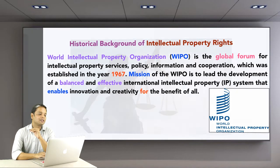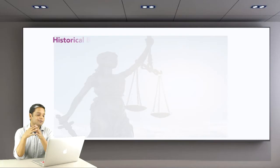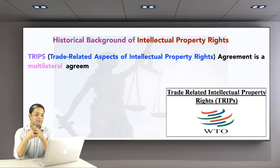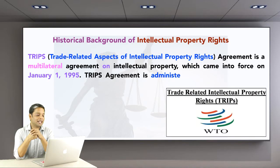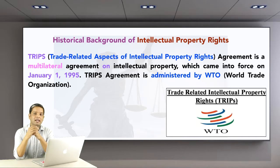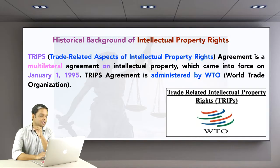The next important instrument is the TRIPS Agreement — Trade Related Aspects of Intellectual Property Rights. The TRIPS Agreement is a multilateral agreement on intellectual property which came into force on January 1st, 1995. It is administered by the WTO — the World Trade Organization — so it is not independent but works under the WTO and has a similar function.